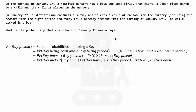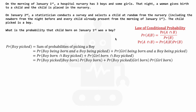Expanding on this further using the laws of conditional probability, we have the following. We now have two conditional probabilities appearing. On the first term, we have the probability of a boy being picked given that a boy is born. On the second term, we have the probability of a boy being picked given that a girl is born.